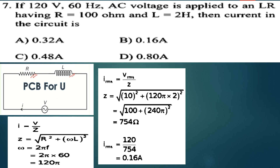Calculating the impedance using Z equal to the square root of R squared plus XL squared, we get Z equal to approximately 754 ohms.